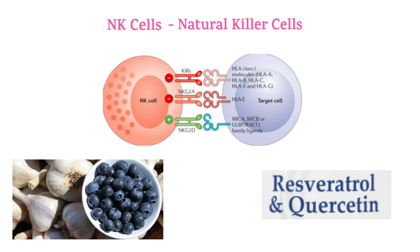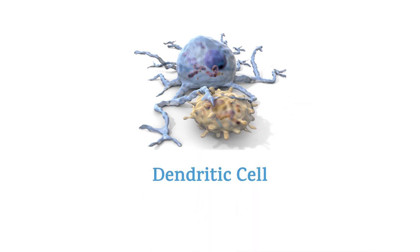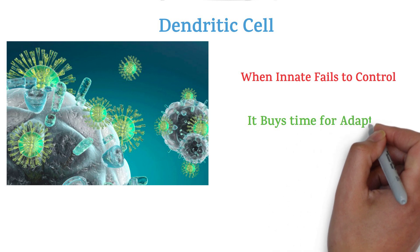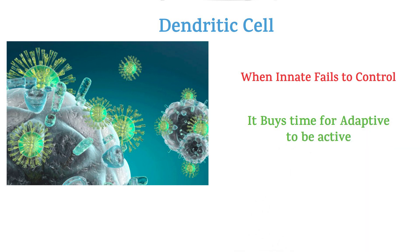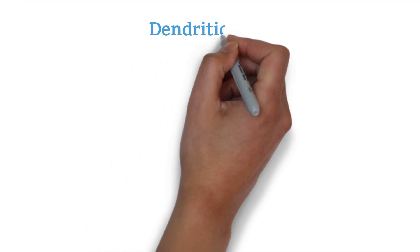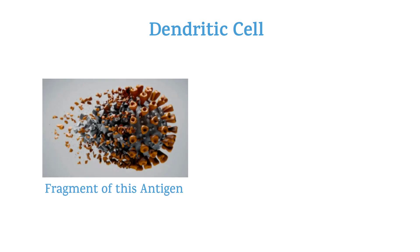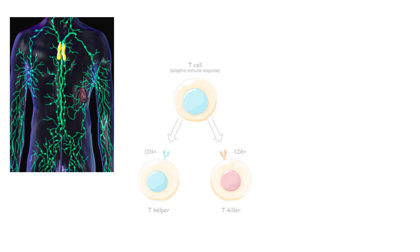Do you remember a few minutes back I said dendritic cells are my favorite innate immune cell? Now they will be your favorite too. The innate immune system fights hard against the infection — real hard — and sometimes it fails to control the infection. Even then, it buys time for the adaptive immune system to be activated. That is very important. We all know innate immune response is fast and adaptive immune response is slow. In order to activate the adaptive immune system, the dendritic cell has to carry a fragment of this antigen to the lymph node, where naive T cells are waiting to become T helper and T killer cells.